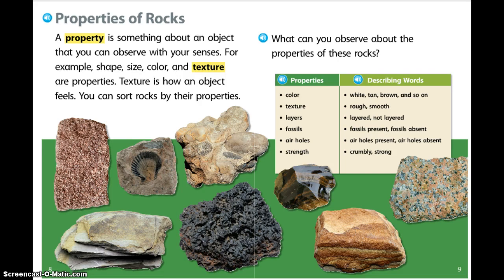Let's take a look at the table and look at some properties of the rocks in the picture. Color: white, tan, brown, and so on. Texture: I see rough rocks and smooth rocks. Layers: layered, not layered. Fossils: fossils present, fossils absent.